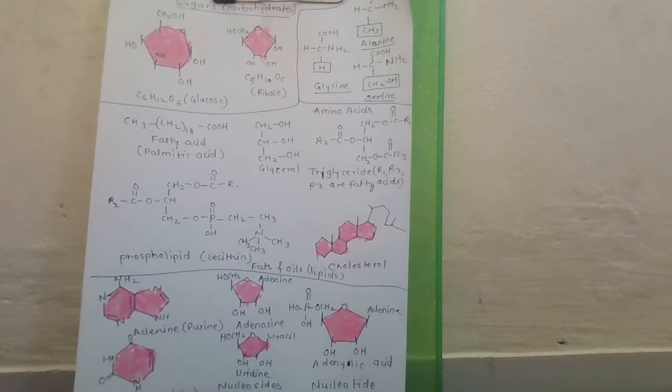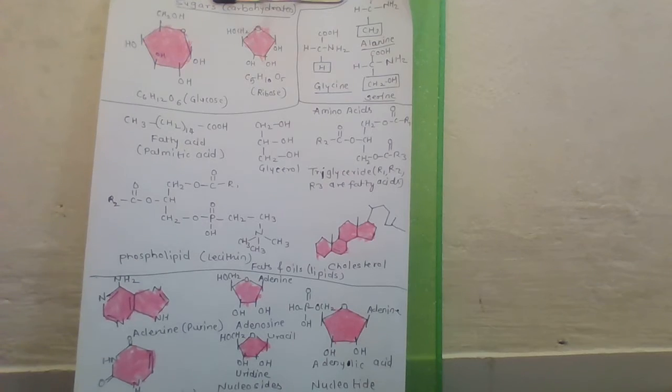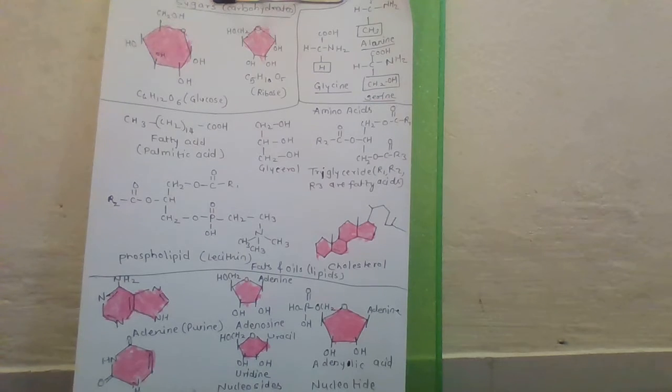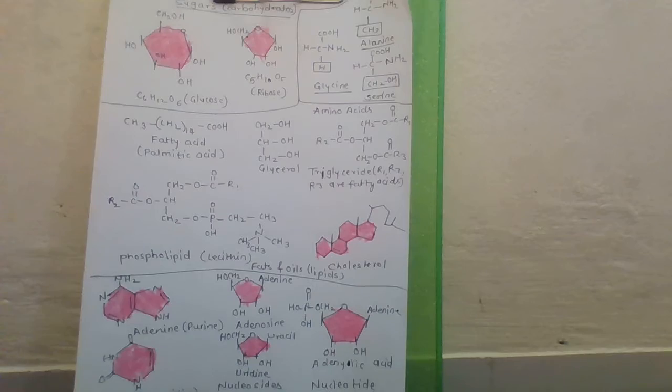Amino acids are organic compounds containing an amino group and acidic group as substituents on the same carbon. That is alpha carbon. They are called alpha amino acids.